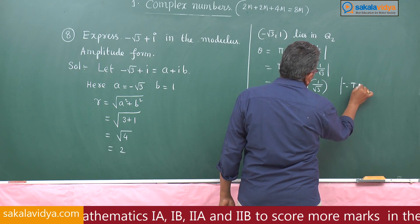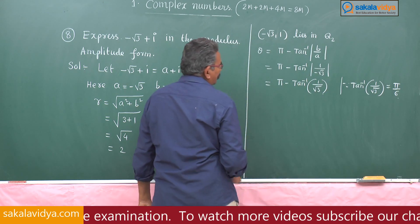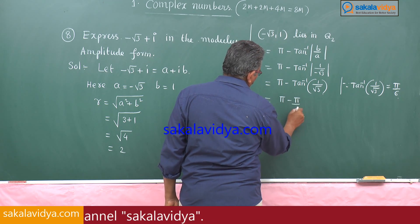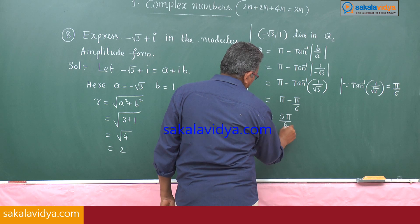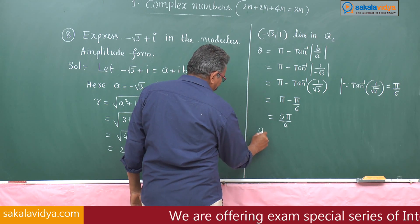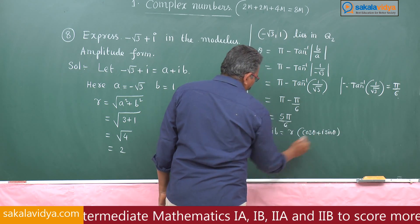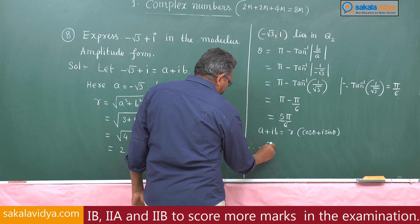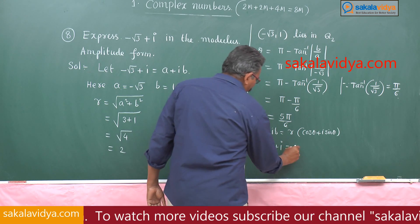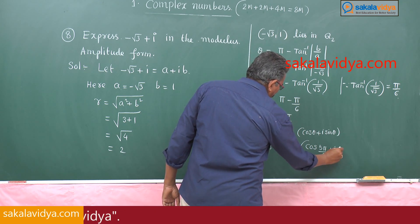tan inverse of 1 by root 3 is 30 degrees, which is pi by 6. So theta equals pi minus pi by 6, which is 5π/6. Using the formula, minus root 3 plus i equals 2 times (cos 5π/6 plus i sin 5π/6).